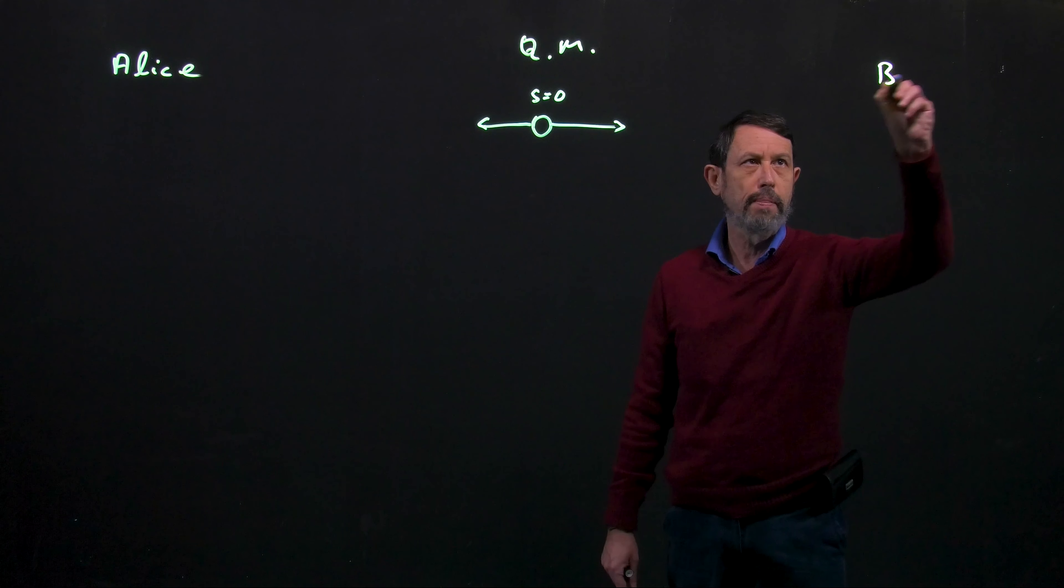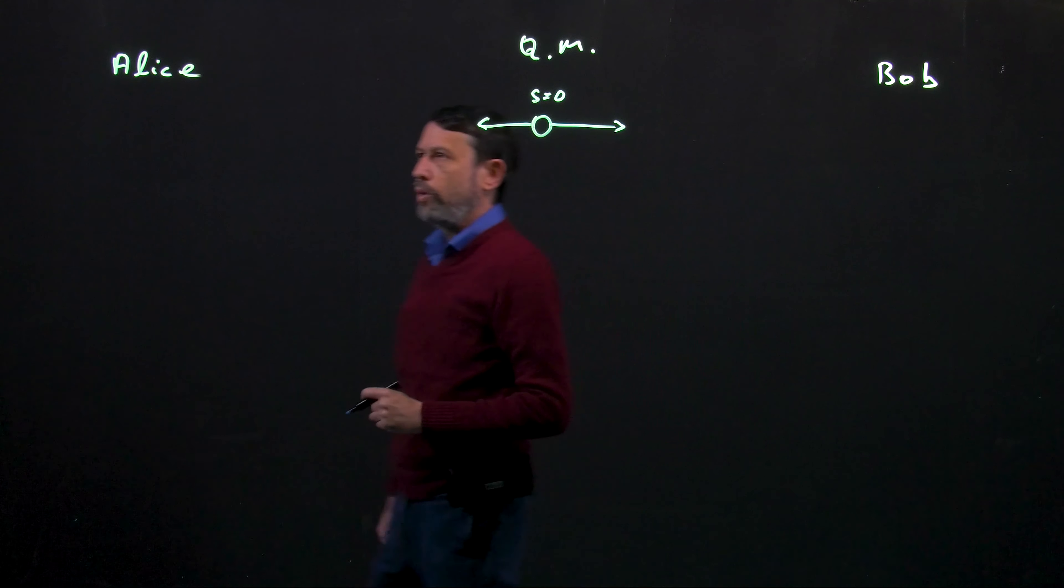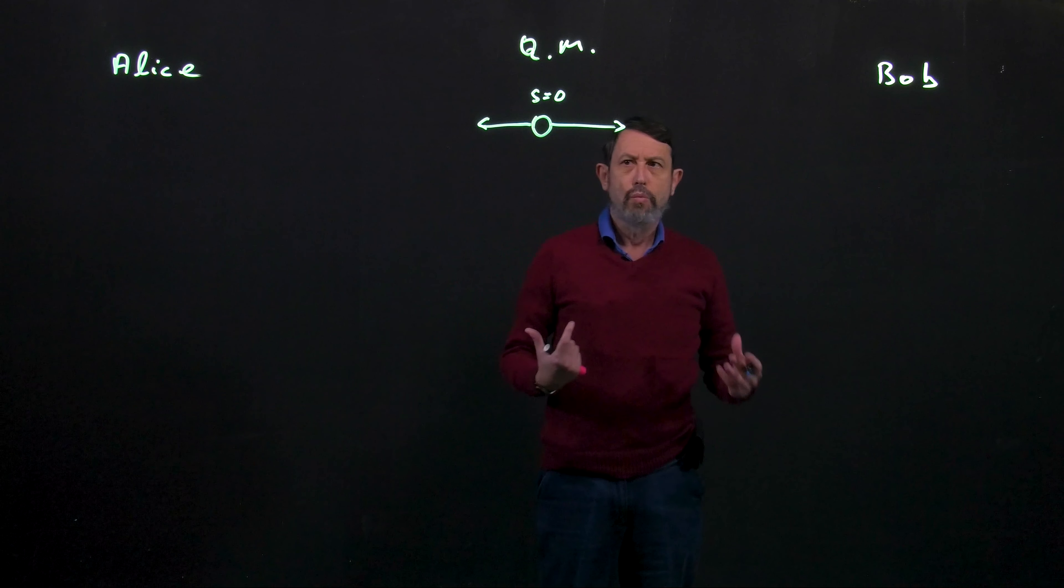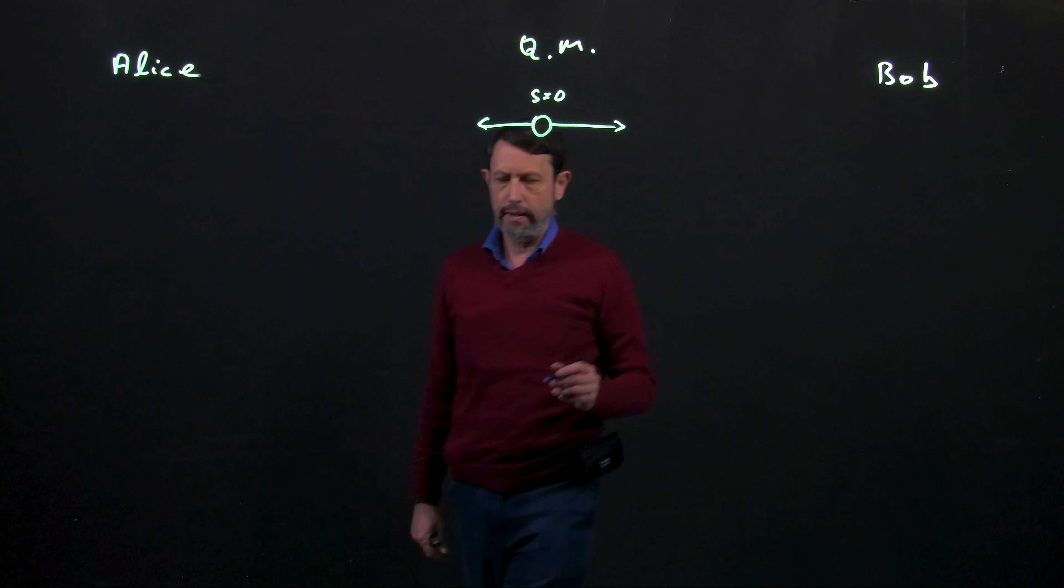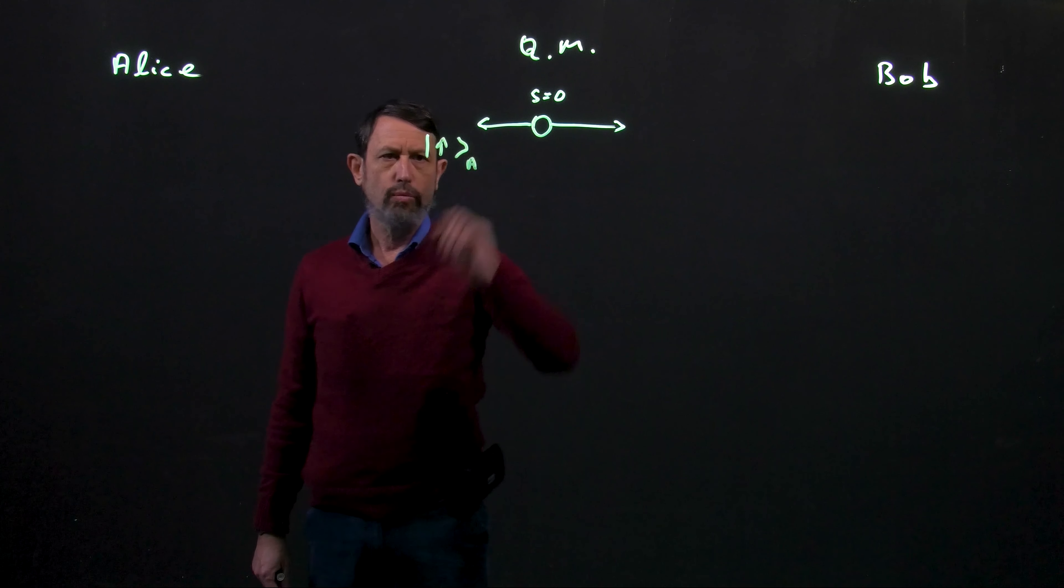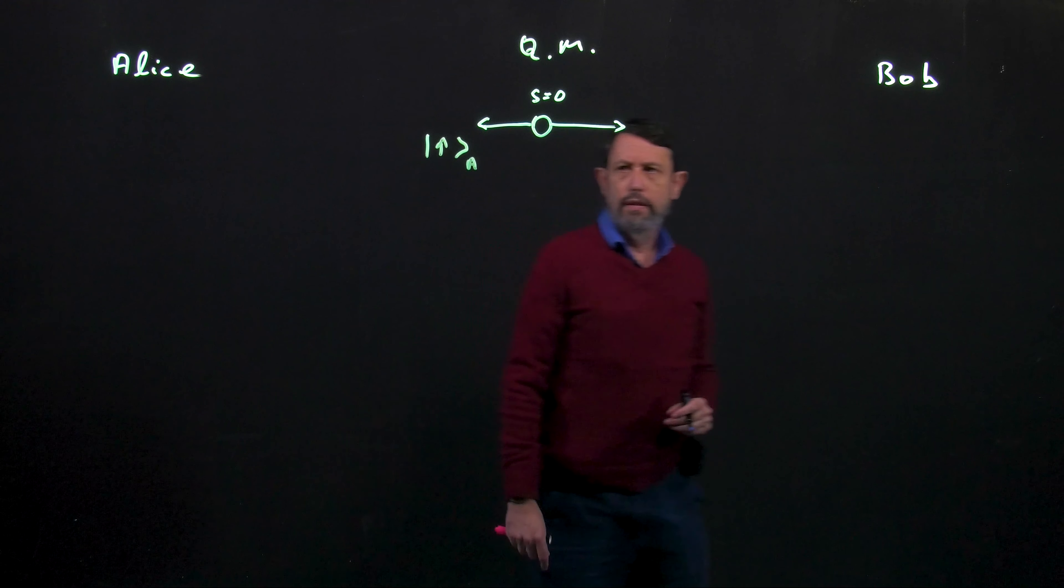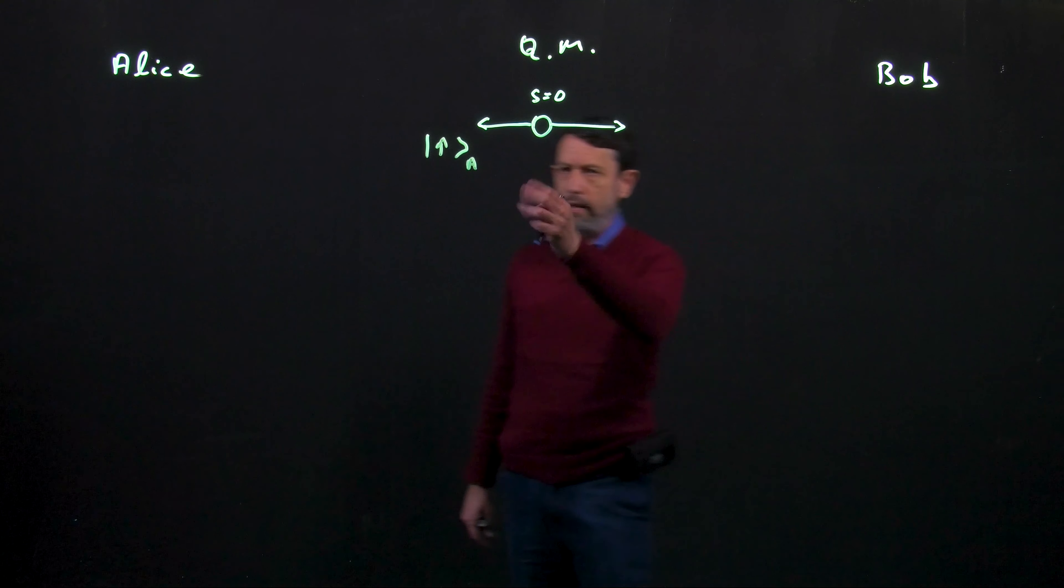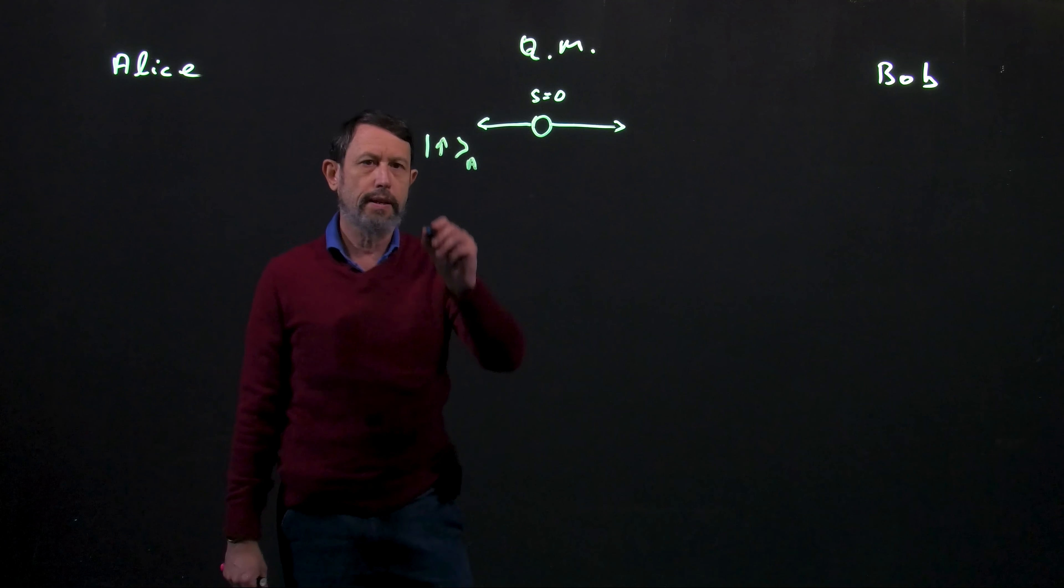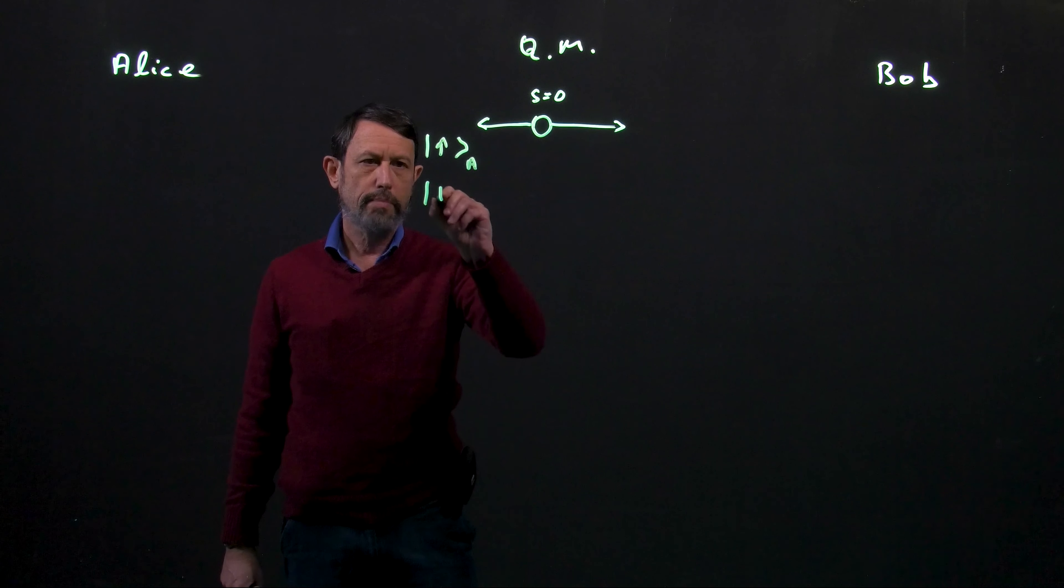So we have Alice and Bob. Now since we are dealing with quantum mechanics we have wave functions of the particles. Let's say one of the particles is going in the direction of Alice and we'll denote it as the particle that goes to Alice with the letter A and that could be in spin up or spin down.